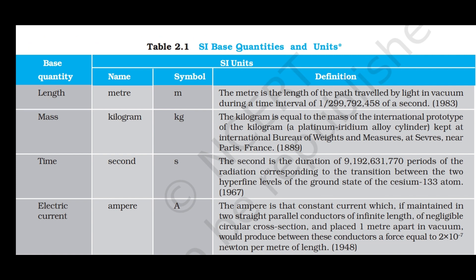Table 2.1 SI base quantities and units. Length: the metre is the length of the path traveled by light in vacuum during a time interval of 1/299,792,458 of a second (1983). Mass: the kilogram (symbol: kg) is equal to the mass of the international prototype of the kilogram, a platinum-iridium alloy cylinder kept at the International Bureau of Weights and Measures at Sèvres, near Paris, France (1889). Time: the second (symbol: s) is the duration of 9,192,631,770 periods of the radiation corresponding to the transition between the two hyperfine levels of the ground state of cesium-133 atom.